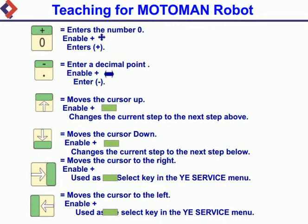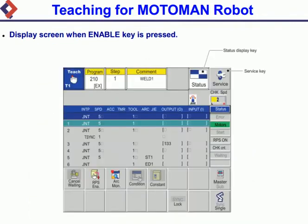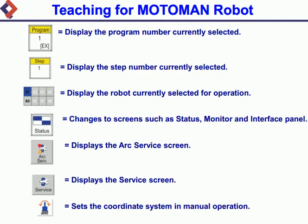Display screen when Enable key is pressed. Displays the program number currently selected. Displays the step number currently selected. Displays the robot currently selected for operation. Changes to screens such as status, monitor, and interface panel. Displays the ARC service screen. Displays the service screen. Sets the coordinate system in manual operation.